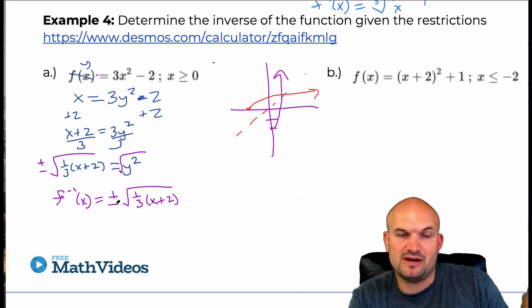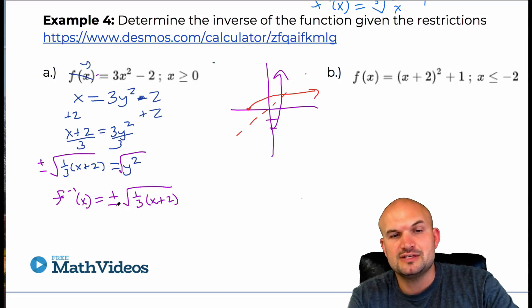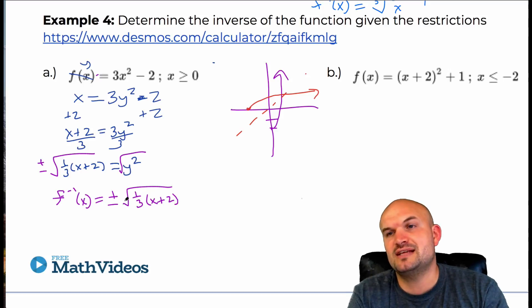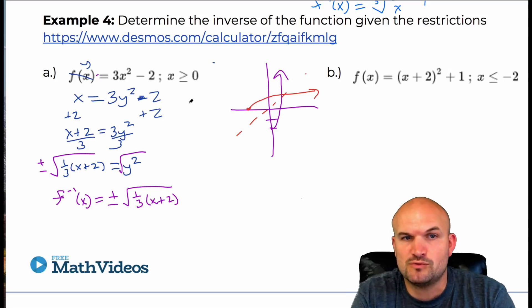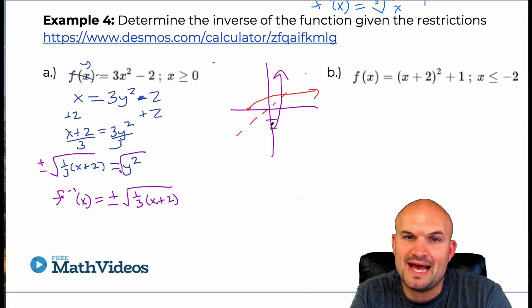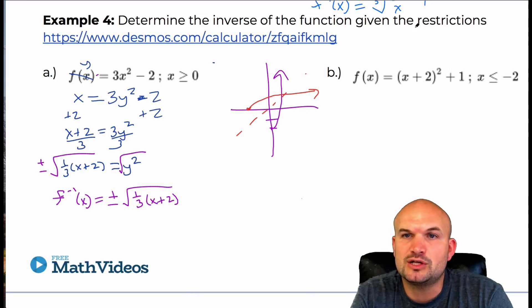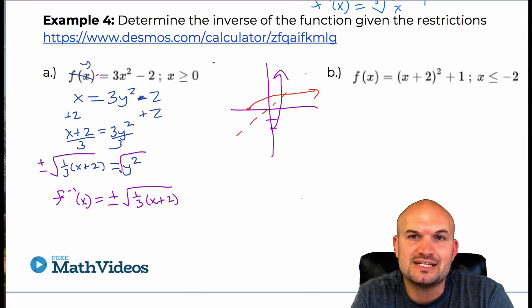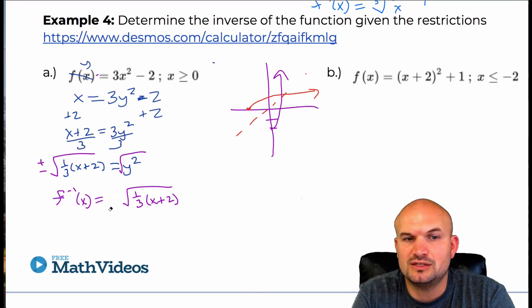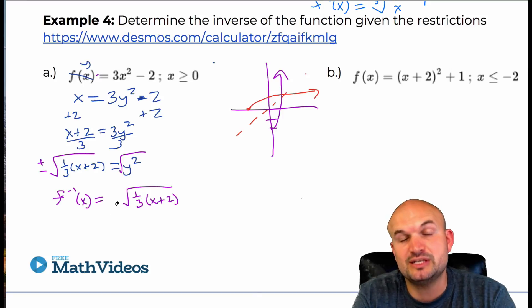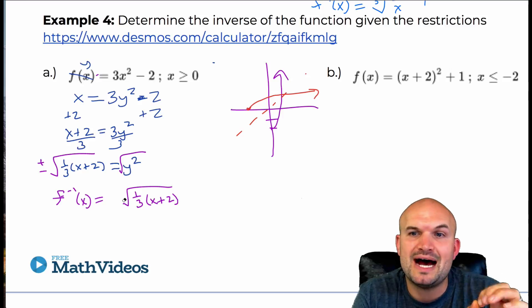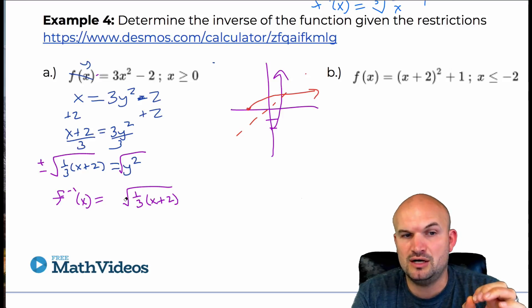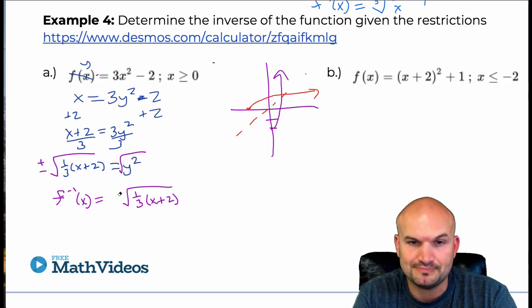That's not going to produce a function because for every x value you'd have two y values, which violates the definition of a function. But since we have the restriction where x values remain positive, we're only going to include the positive root. We don't need to write plus — we just know we're only taking the positive root of our inverse function.